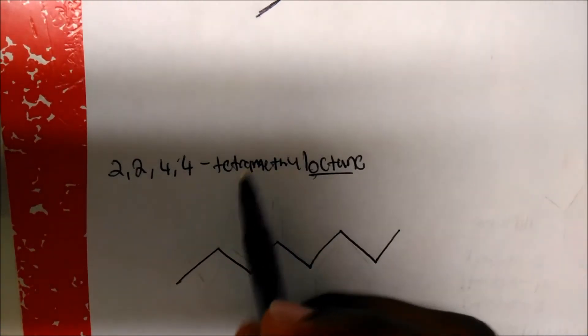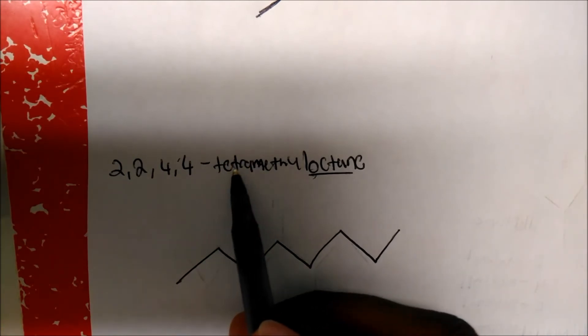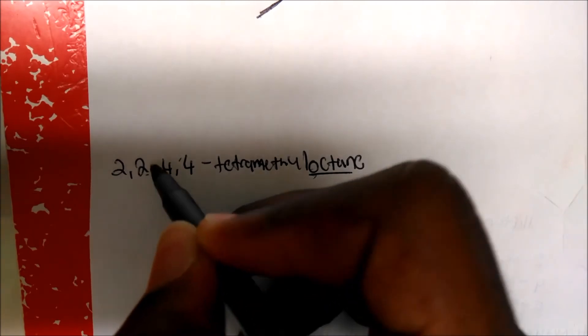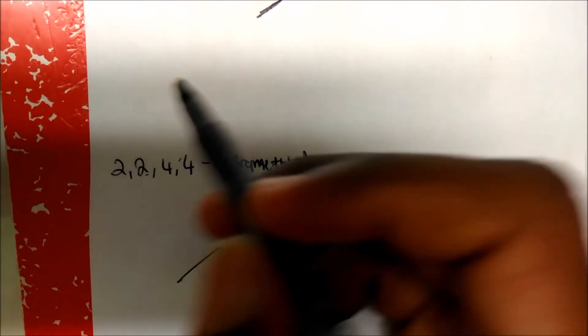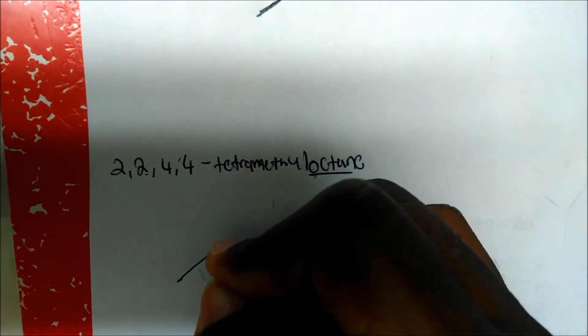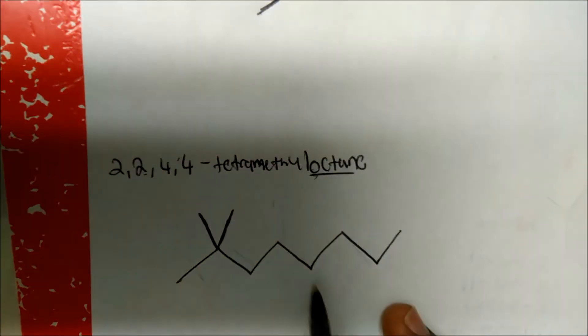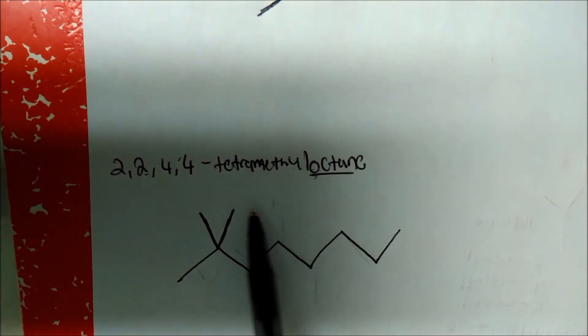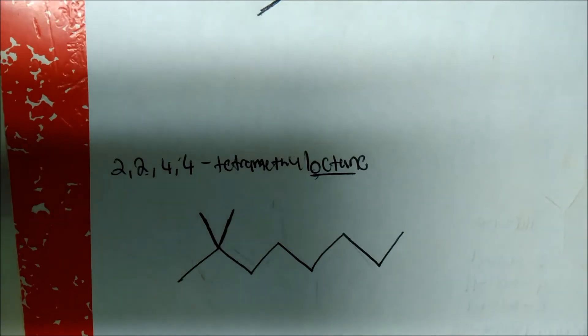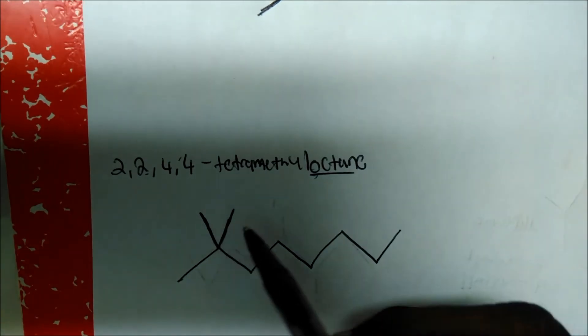Let's read what it's saying. We know we have four methyl groups because this is tetra. Now it says on carbon 2, there's actually two methyl groups. So basically, they're giving these two methyl groups a number. So on carbon 2 right here, we have one methyl group and two methyl groups.